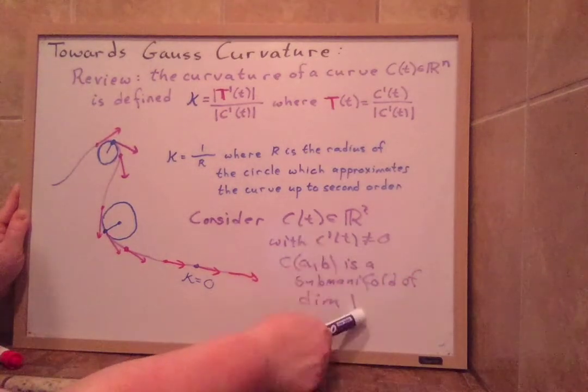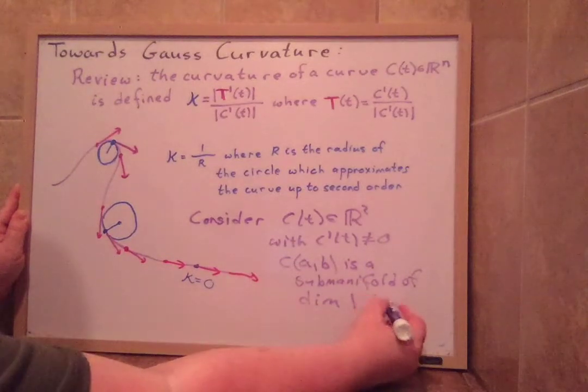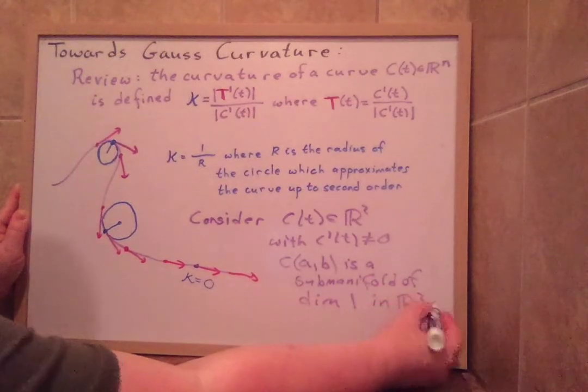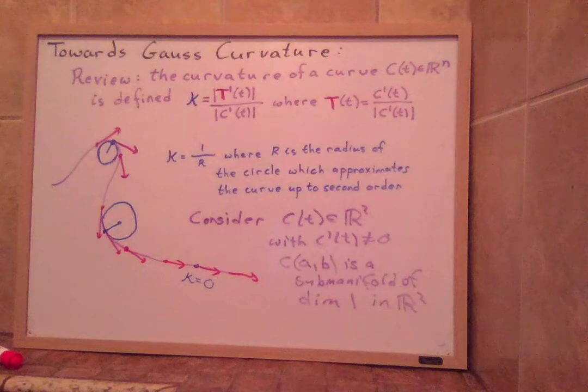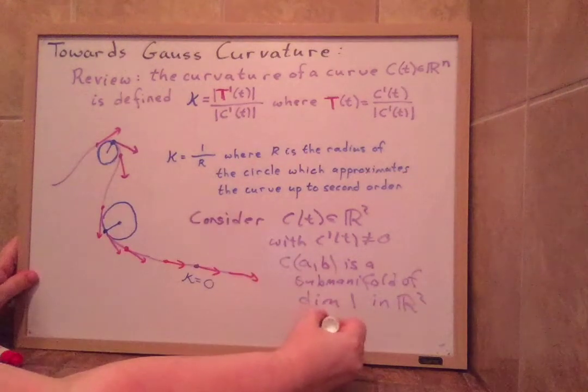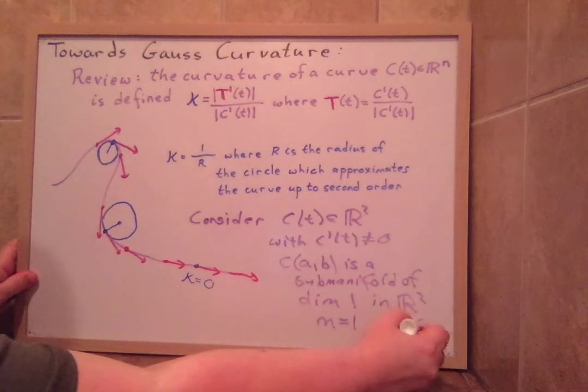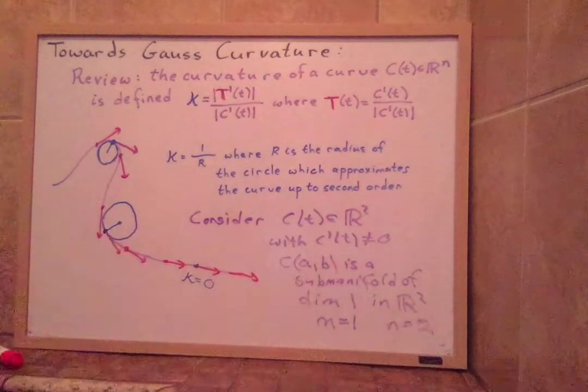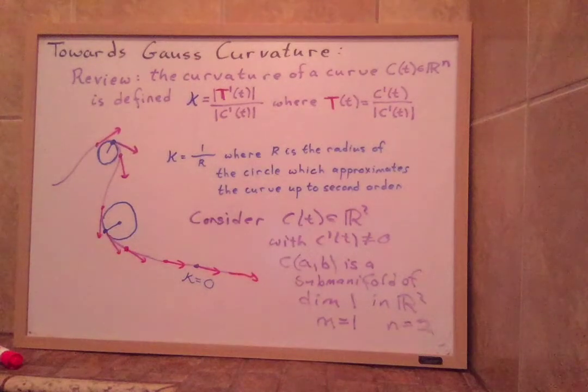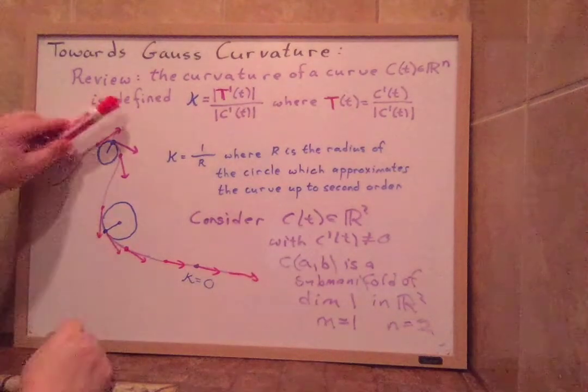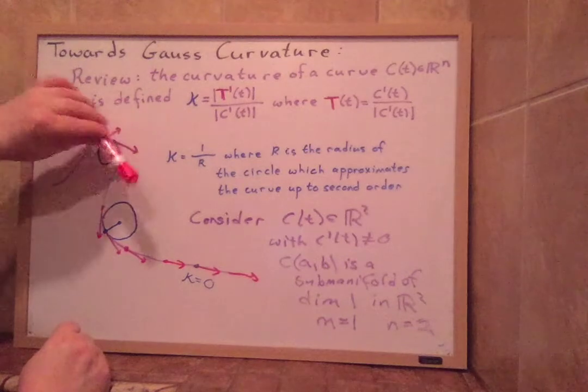It only has one parameter, so it's a submanifold of dimension 1 in R^2. So as a submanifold of dimension 1 in R^2, remember when we have m, the dimension of our submanifold, equal to n minus 1, then we have the tangent space to the submanifold. Well, the tangent space is one-dimensional, it's just lines.